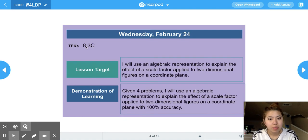Today's TIC is 8.3c. Our lesson target is I will use an algebraic representation to write, to explain the effects of a scale factor applied to two-dimensional figures on a coordinate plane with 100% accuracy.